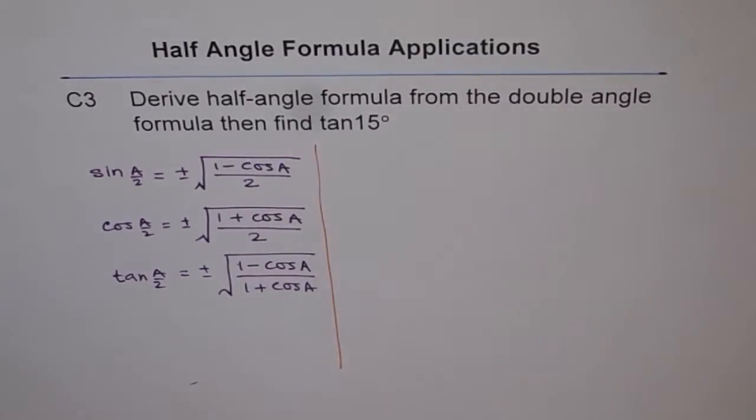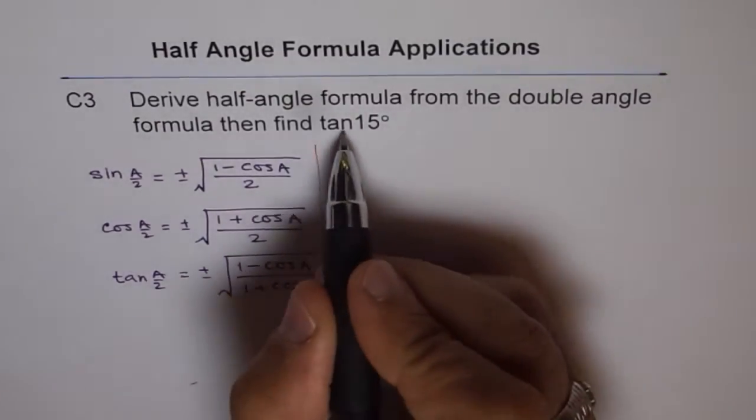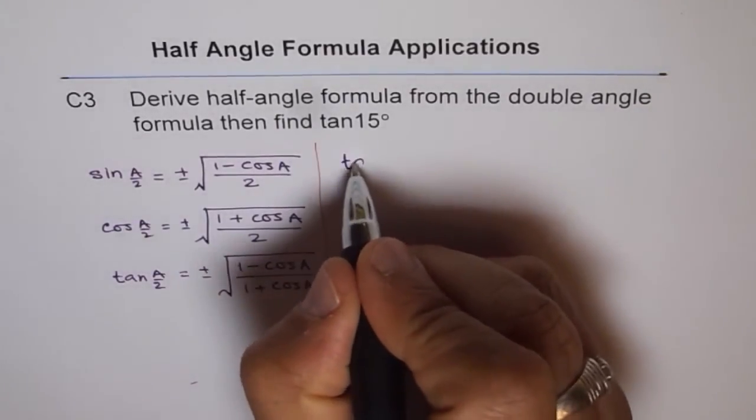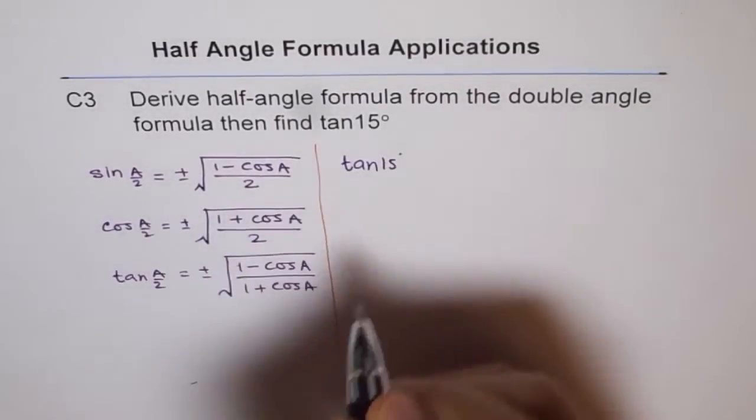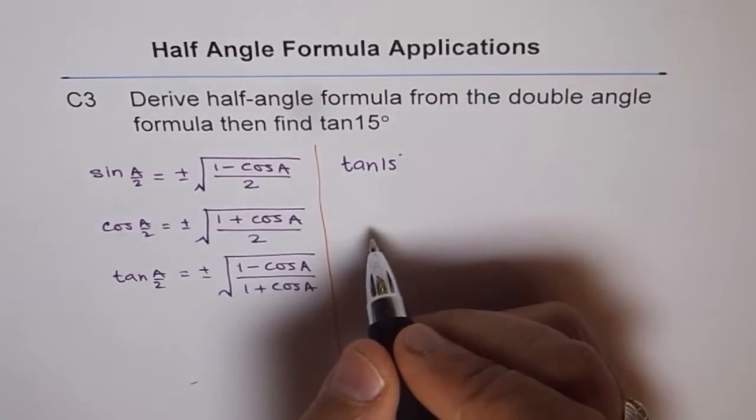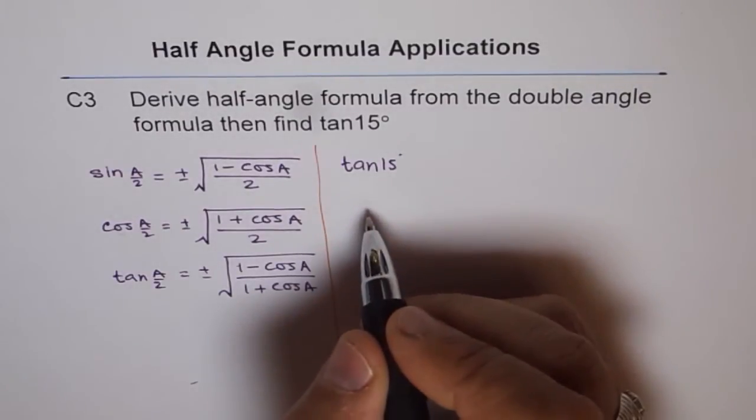Now, let us try to apply them and get the result. Tan 15. We want to find tan of 15 degrees. Tan of 15 degrees could be written as tan of 30 divided by 2.